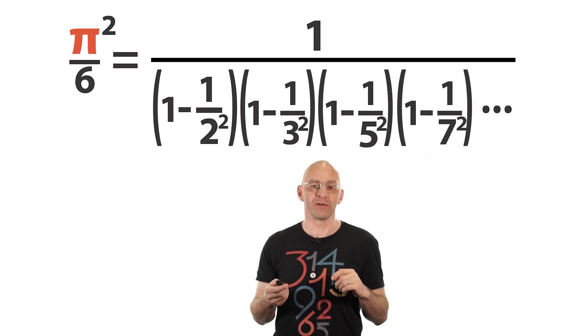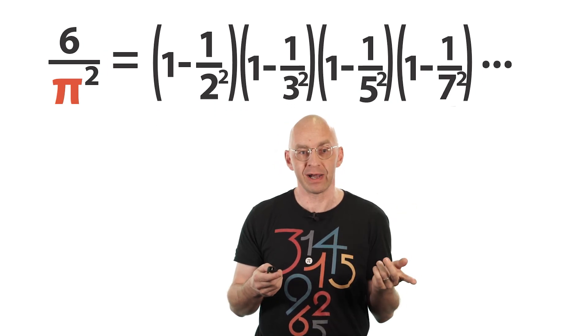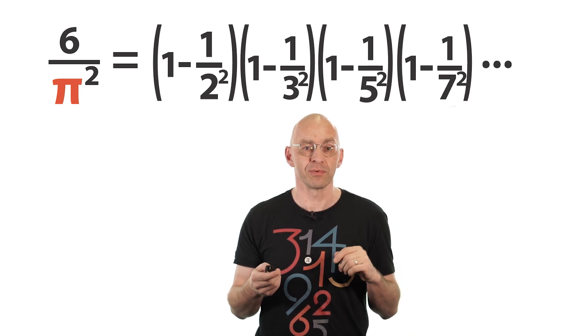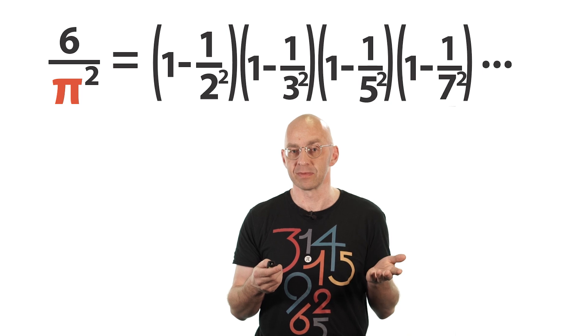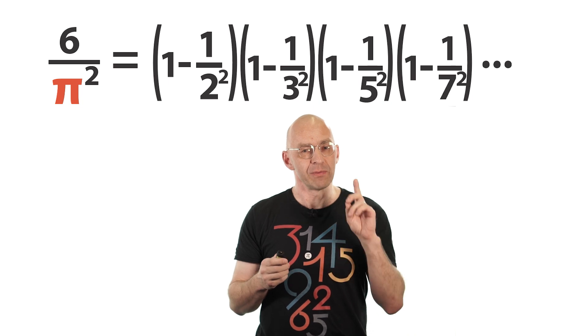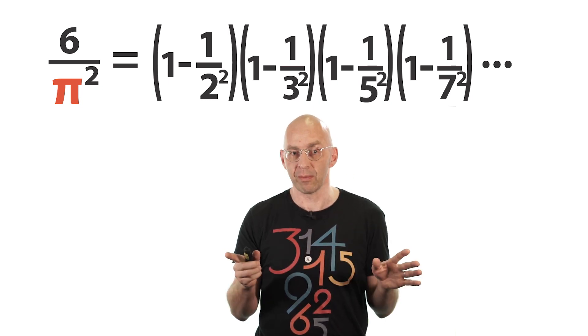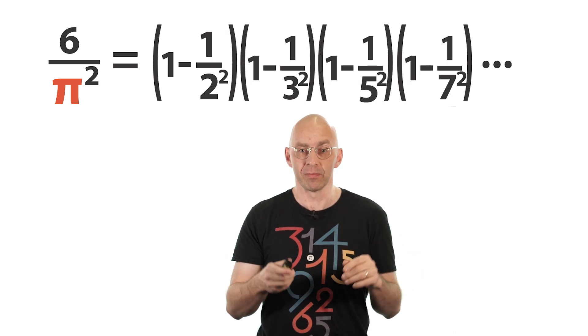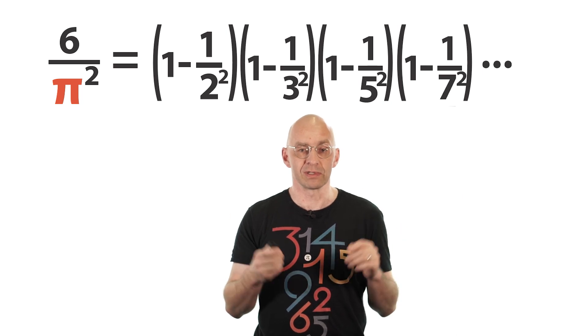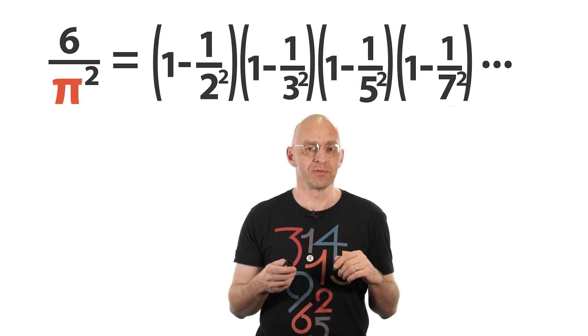Now let's look at the reciprocal of this identity. This is Euler's product connecting the primes with pi that I promised you at the beginning. Now this stunning identity also amounts to a proof of the following very curious fact. So what we do is we pick two natural numbers randomly. Then the probability that these two numbers are relatively prime, so have no common factors in common except for 1, that probability is equal to 6 over pi squared, which is about 61%. So how on earth is this identity a proof of this fact?